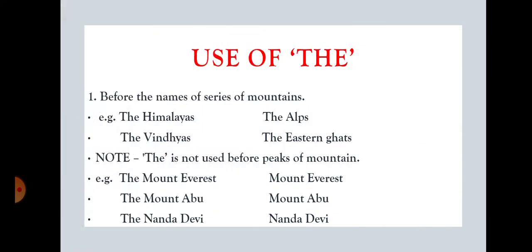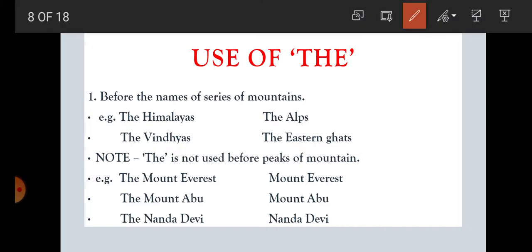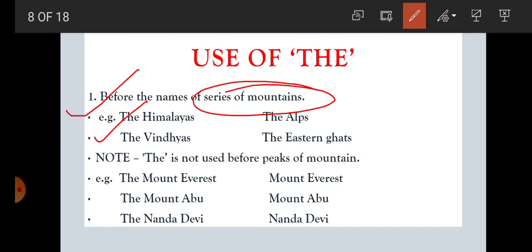Now, students, we are going to read about some particular uses of 'the.' I have given 10 rules of 'the,' so one by one we will read them. Rule number one: before the names of ranges of mountains, we use 'the.' For example: the Himalayas, the Alps, the Vindhyas, the Eastern Ghats. They are series of mountains and that is why we have used 'the' before the name.